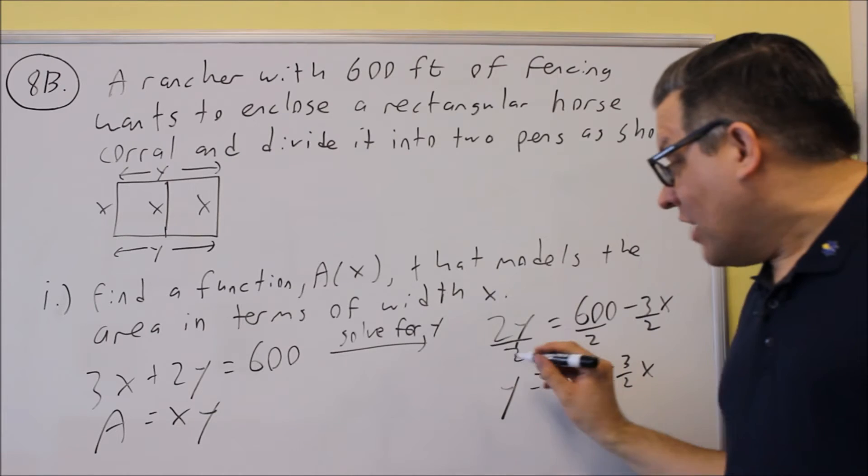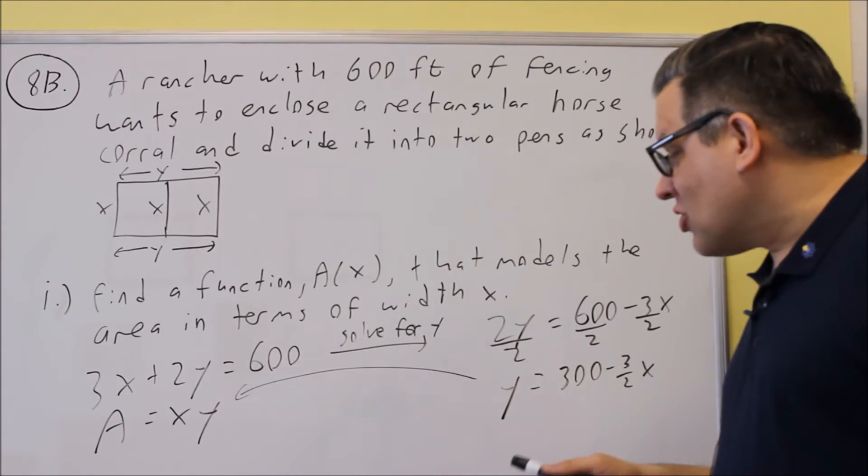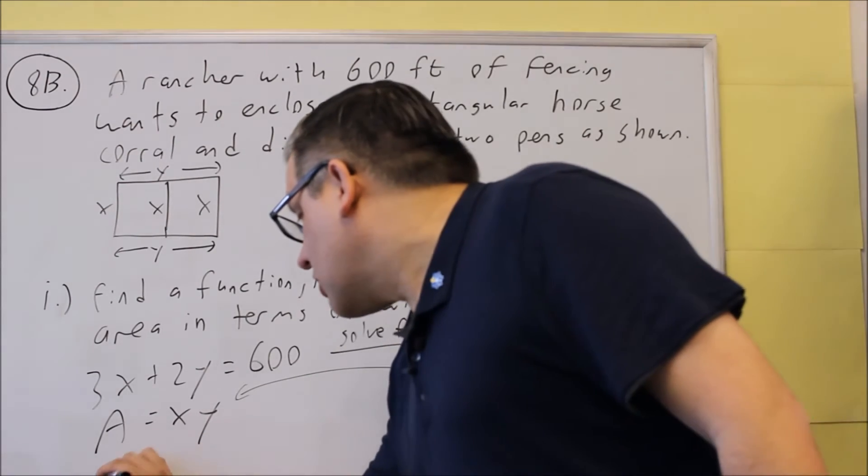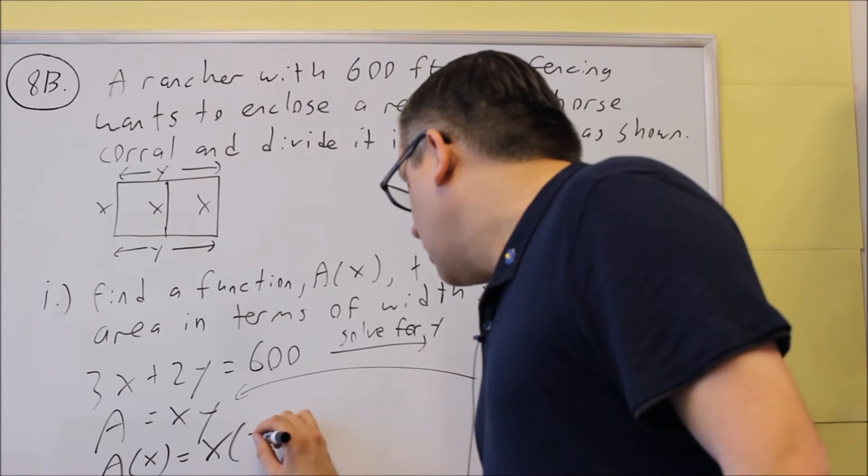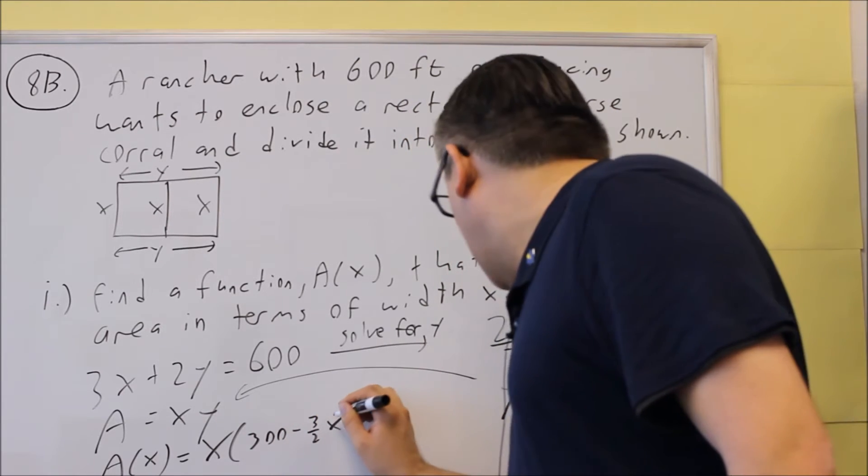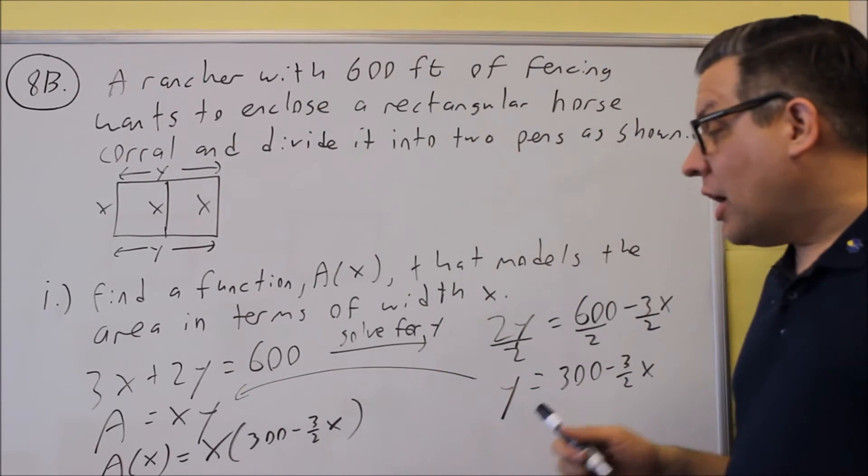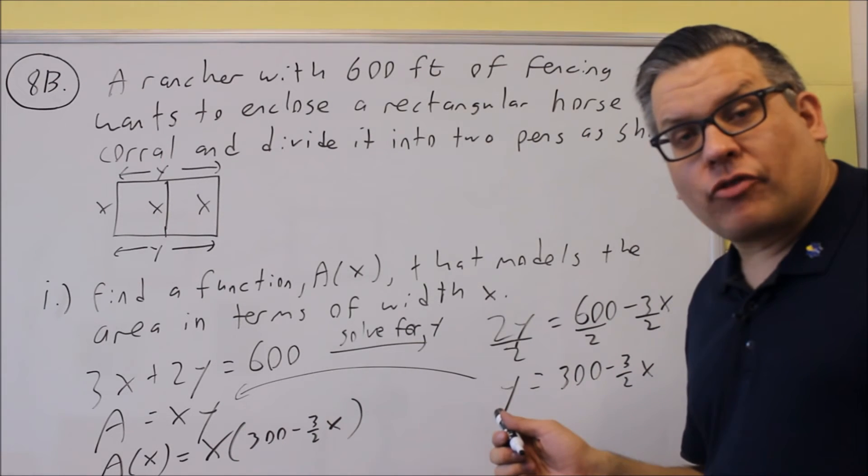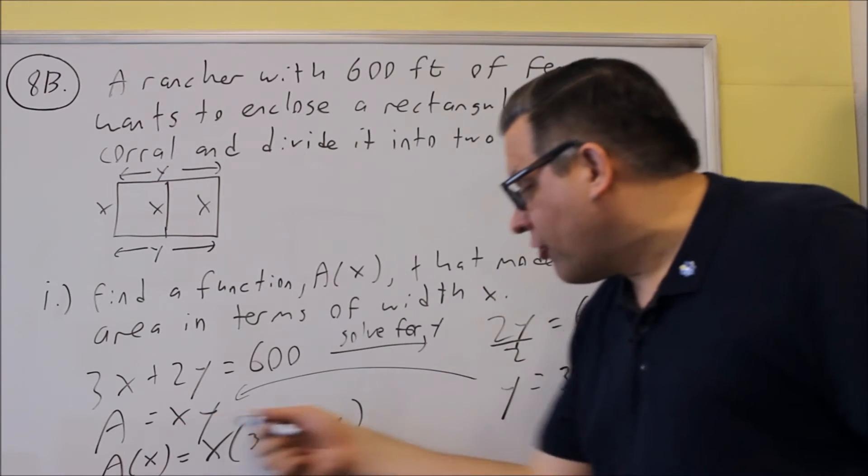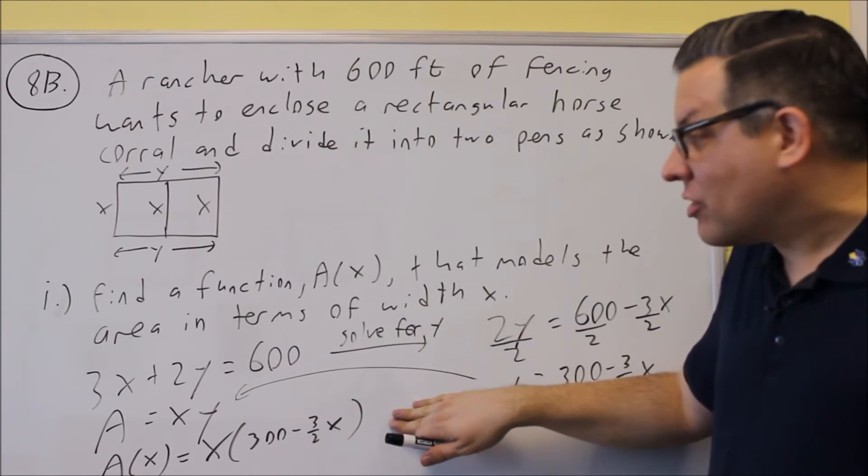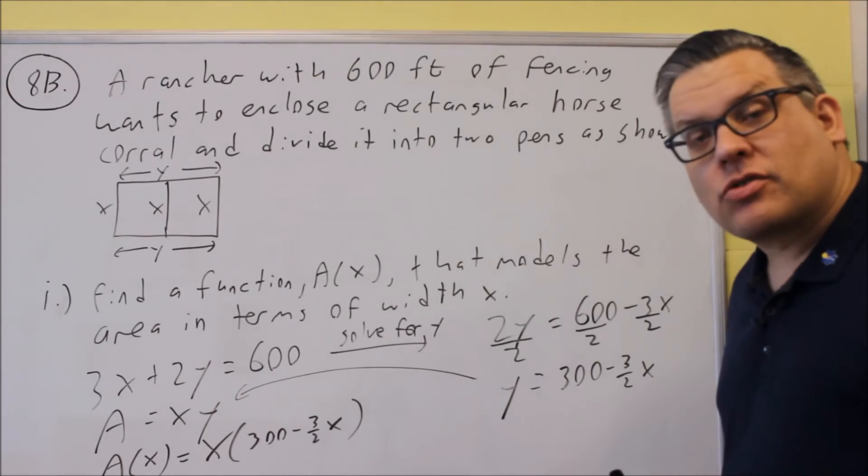What I'll now do is take that y value and put it into this y right here. So that way I can replace it and I'll have everything in terms of x. When I write my answer, I'll use the notation that asked me to use, A of x. That's going to equal x times 300 minus 3 halves x. And that's actually okay to leave your answer in that form. That would be a model, x times this quantity, 300 minus 3 halves x.